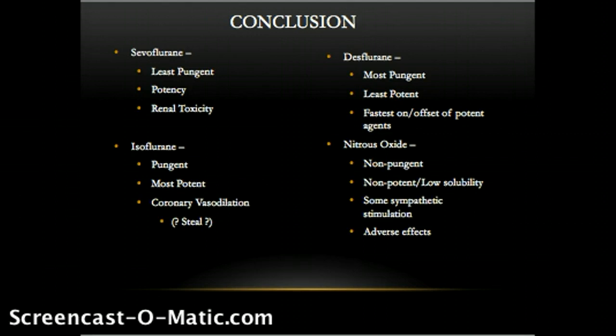Isoflurane is pungent and not recommended for mask induction. It is the most potent and most soluble volatile anesthetic in use in the United States and provides the slowest onset at equal flows. It provides the most coronary vasodilation, and conjecture links it to coronary steal phenomenon in CAD patients.